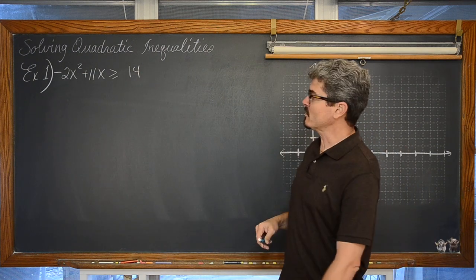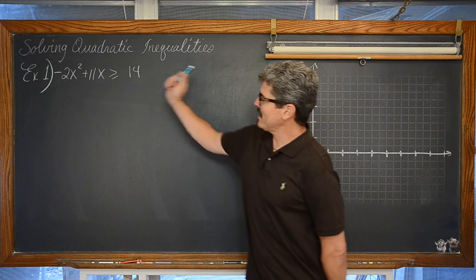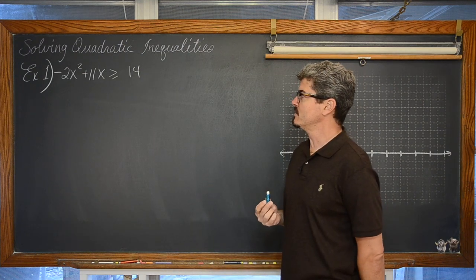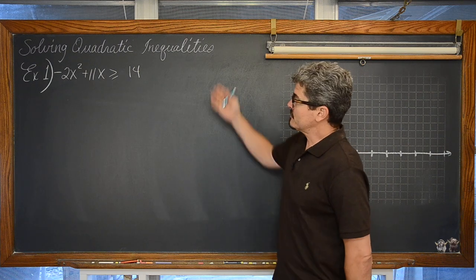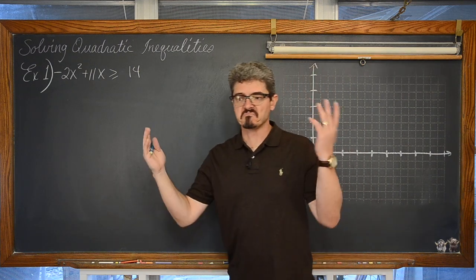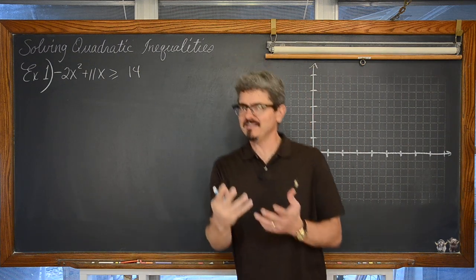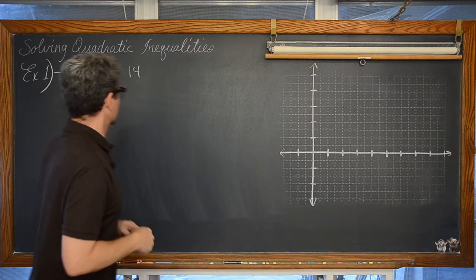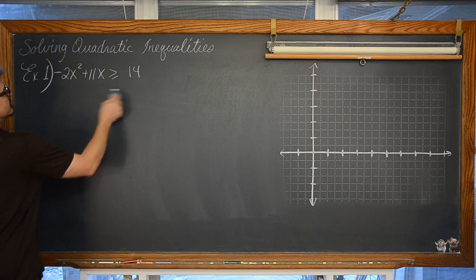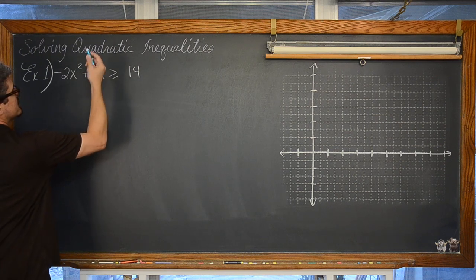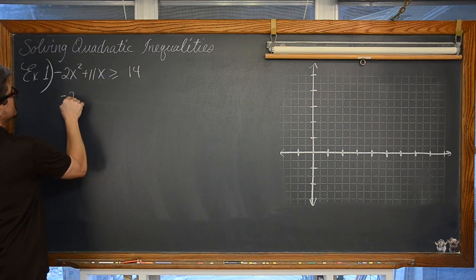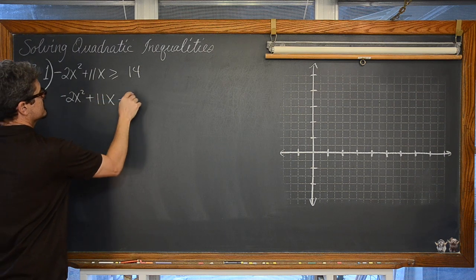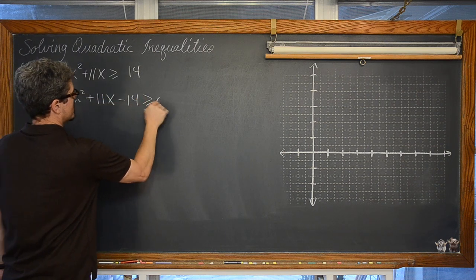We don't need a timestamp for the first one. We are starting it right now. We have negative 2x squared plus 11x is greater than or equal to 14. Solving a quadratic inequality is really just the same in the beginning as solving for the quadratic equation. You have to get that thing set equal to zero. So we are going to bring the 14 over. We have negative 2x squared plus 11x minus 14 is greater than or equal to zero.